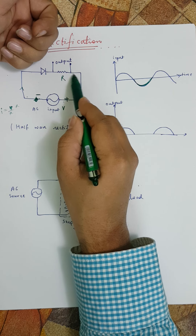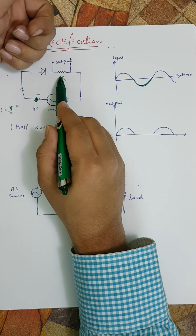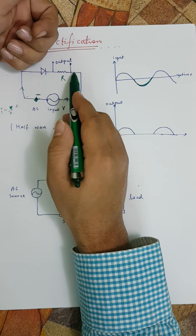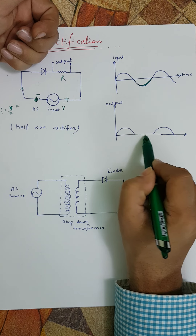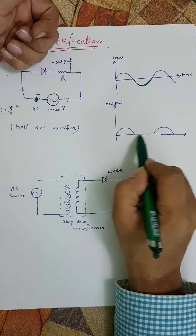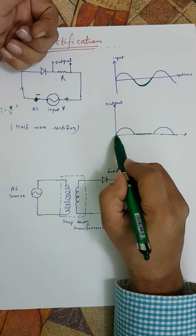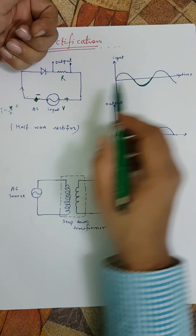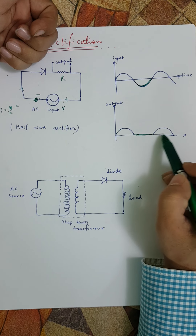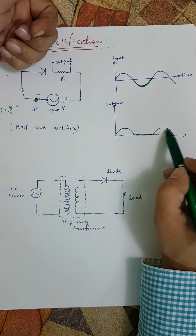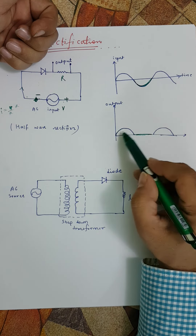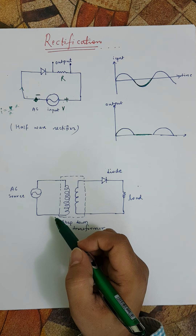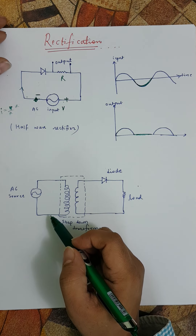So this reverse current is negligible. If the current is negligible, what is the potential difference across this resistance? The potential difference will be zero — no current, so potential difference across the resistance is simply zero in the negative half cycle. Then again in the positive half cycle, current flows and we get the same voltage, so we get this output.